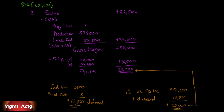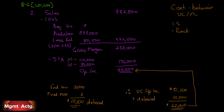When we get $62,000 at the end, we've verified the result is correct. A common mistake is using only the fixed selling and administrative amount while forgetting the variable component. Remember: a contribution format income statement classifies costs by behavior (variable vs. fixed), while a regular income statement classifies costs by function. Don't confuse the two. That completes exercise 8.6.